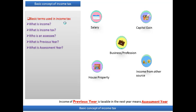Income means money received by an individual or business after providing goods and services to a particular person. On this total income we calculate the tax. For example, if you work in an office as an employee, the monthly salary you receive is called income. Similarly, if you sell shares, debentures, gold, jewellery, or property, the gain on that is also income. Rent received from house property is also called income.